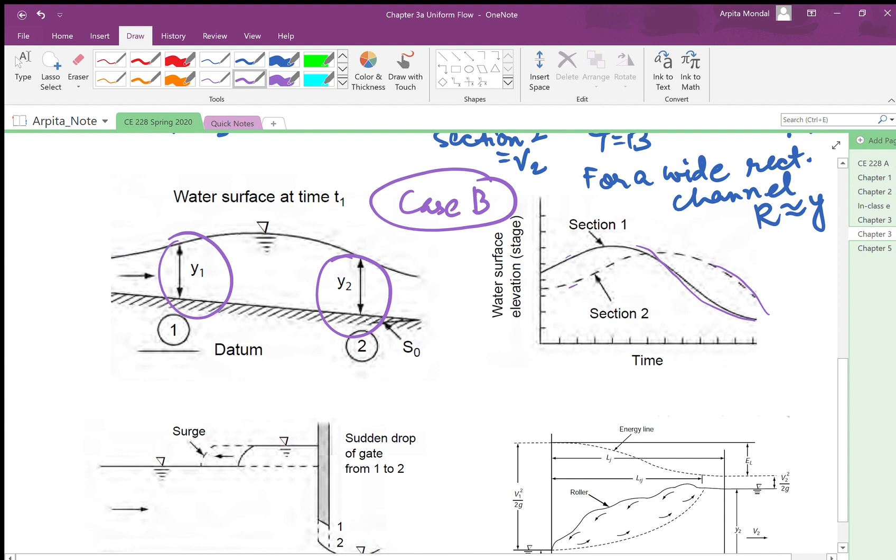So we can assume pressure distribution to be hydrostatic, which means at this section you will have a triangular pressure distribution, at this section you will have a triangular pressure distribution, and so on. So this is a case of gradually varied flow.